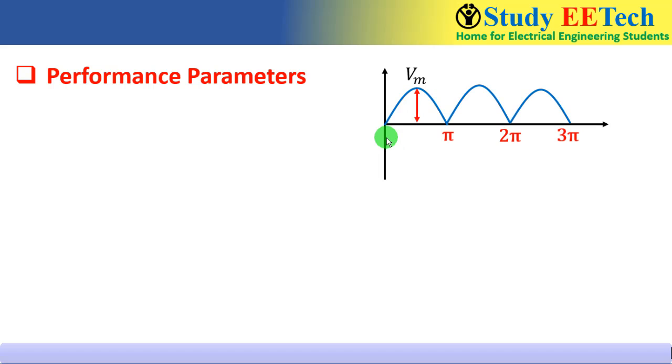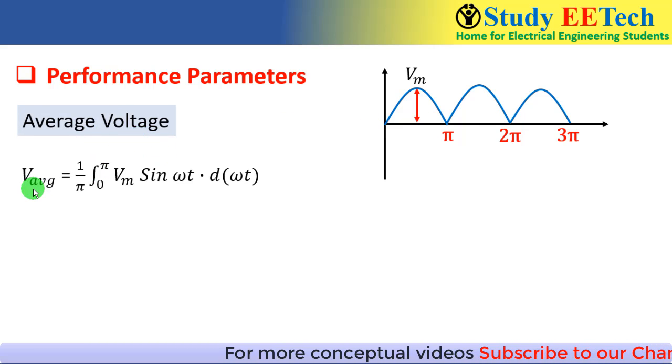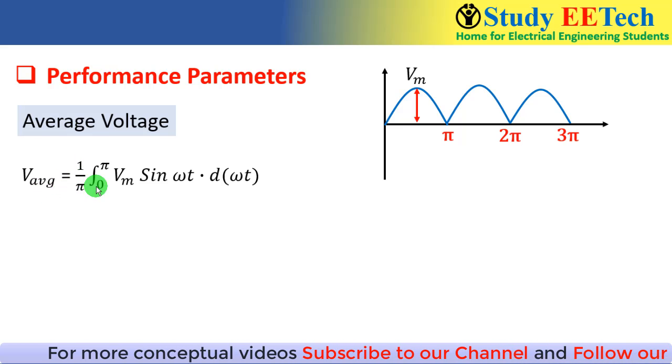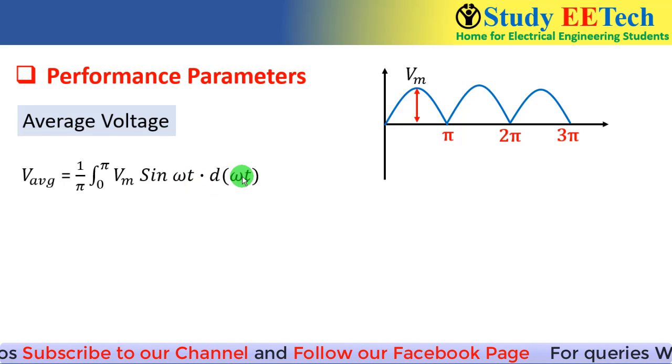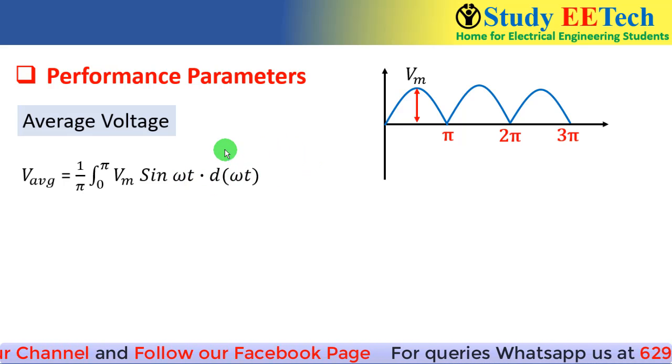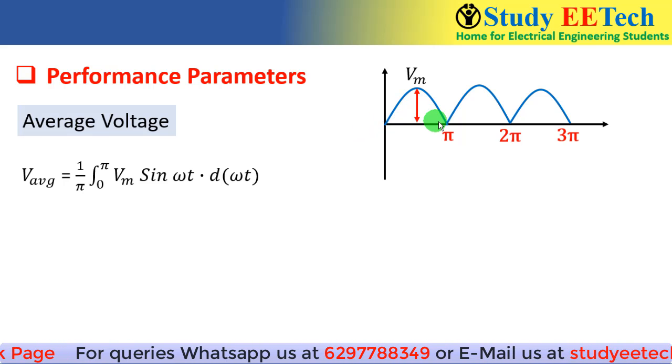The output waveform we have already seen is like this in the previous video. From 0 to π we get the output voltage, π to 2π we also get the output voltage. So to calculate the average voltage, the formula will be V_avg = 1/π ∫₀^π Vm sin ωt d(ωt).